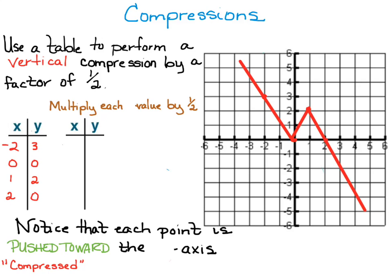In like manner, we want to do the same for a vertical compression. For a vertical compression, we're going to multiply each y value by one-half. When we do, we get this result — you can see it's been squashed and pushed towards the x-axis. So a vertical compression pushes it towards the x-axis, squashing it down.